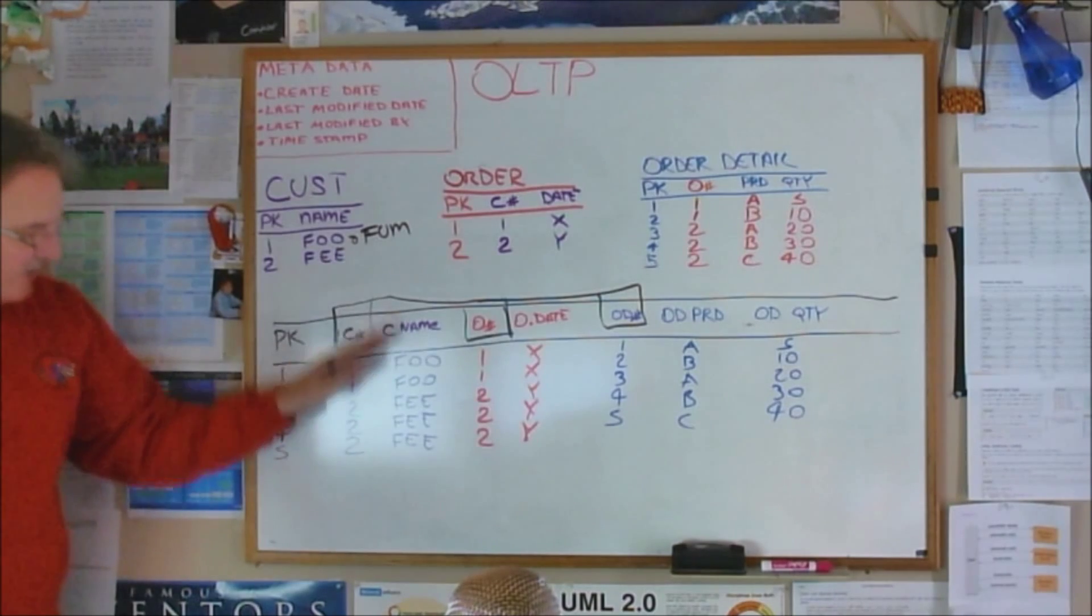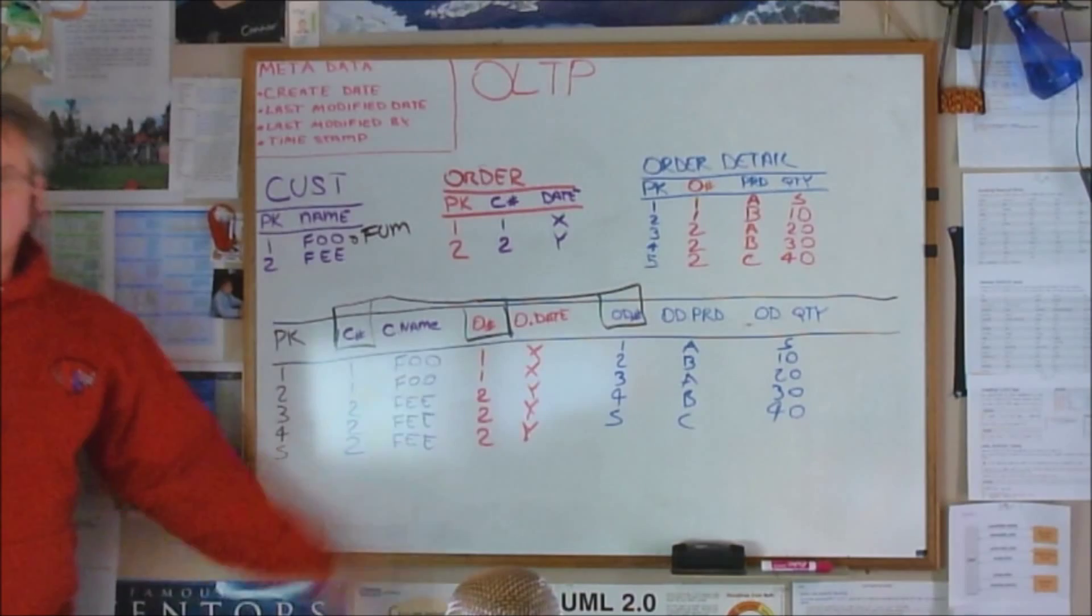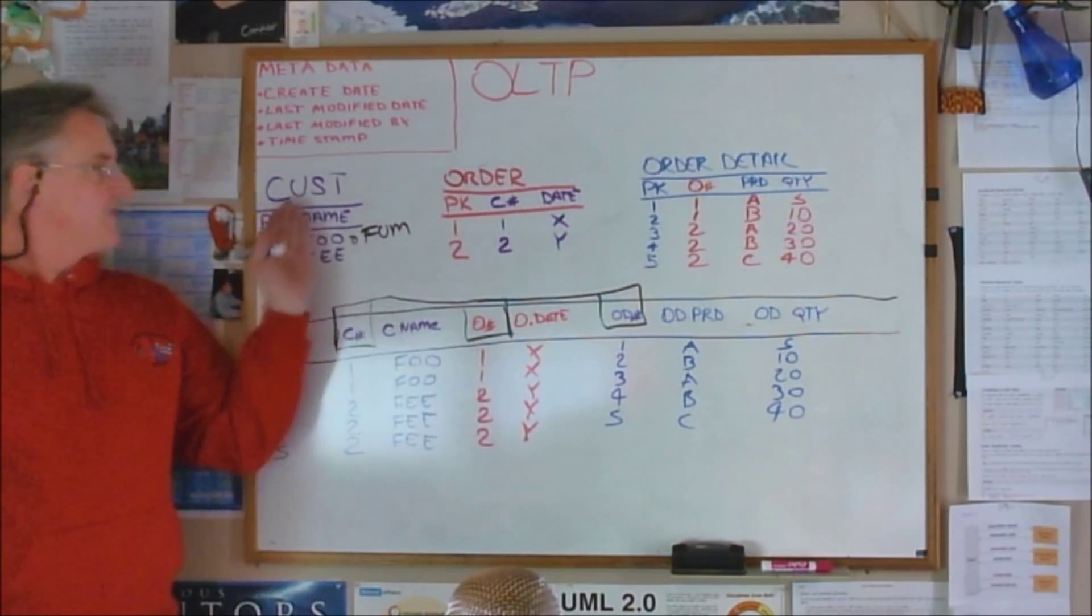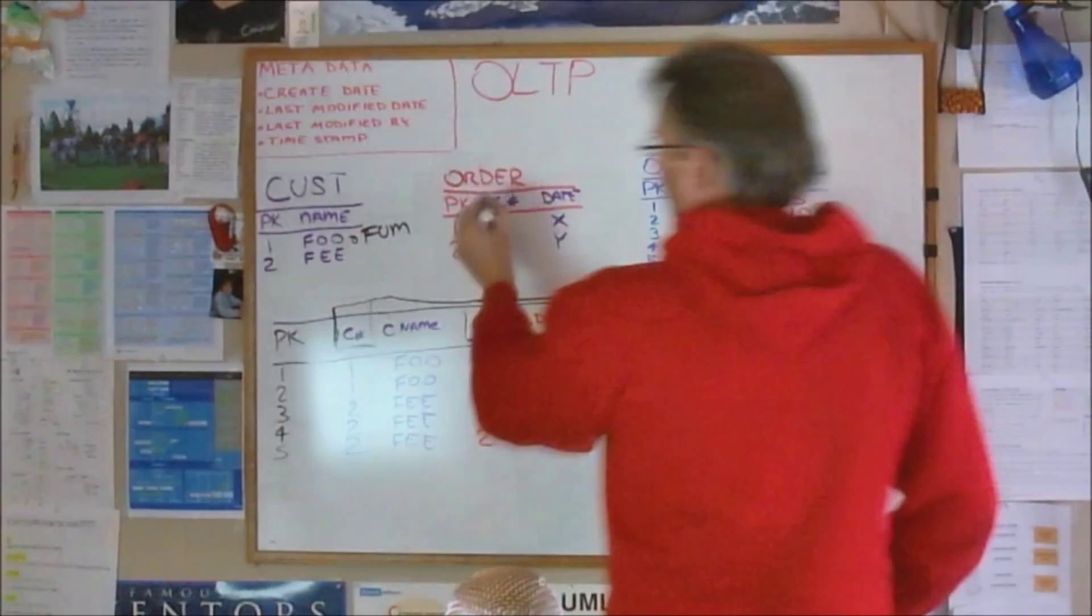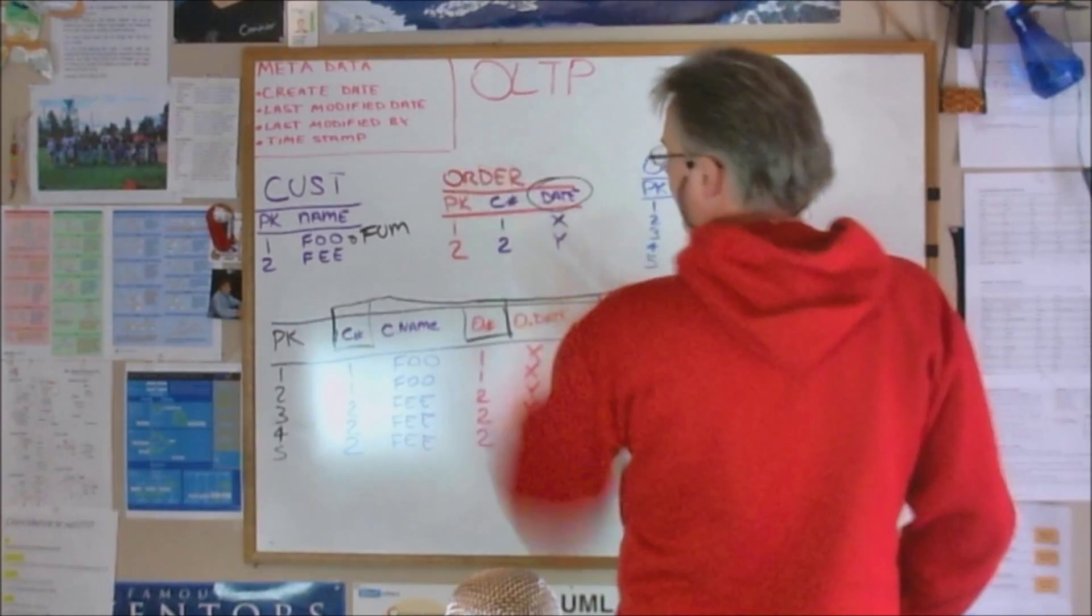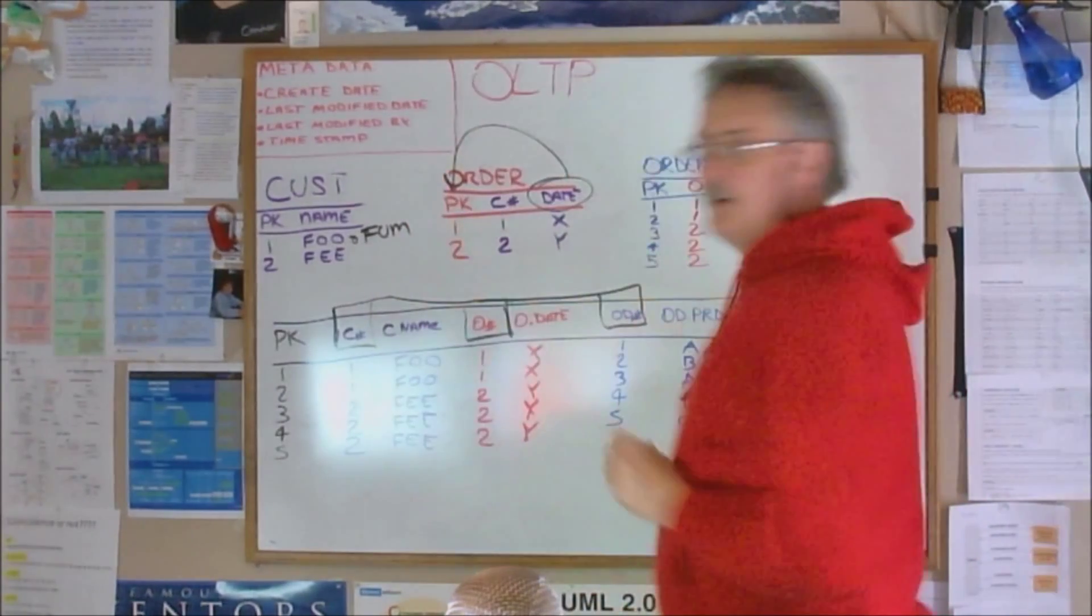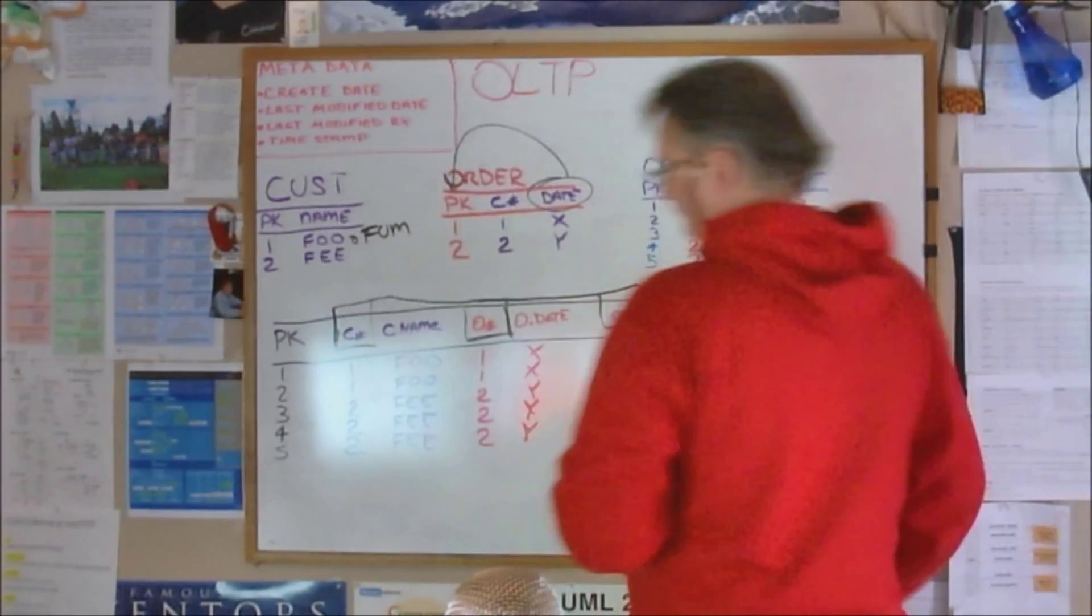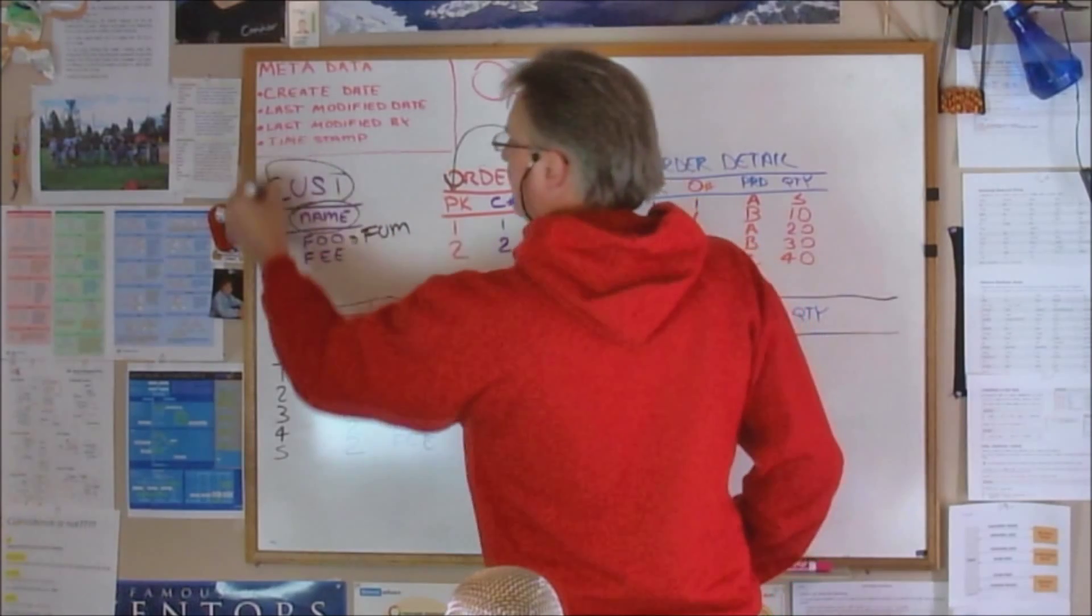So again, as the data gets big it gets worse and worse. As the list grows it gets worse and worse. You want to normalize: customer table, order table, order detail. Now the date in the order table is directly related or dependent on the key. This is a foreign key name directly dependent on the primary key. That's third normal form.